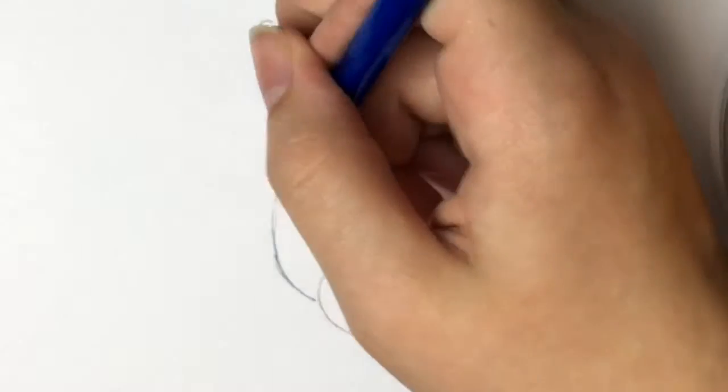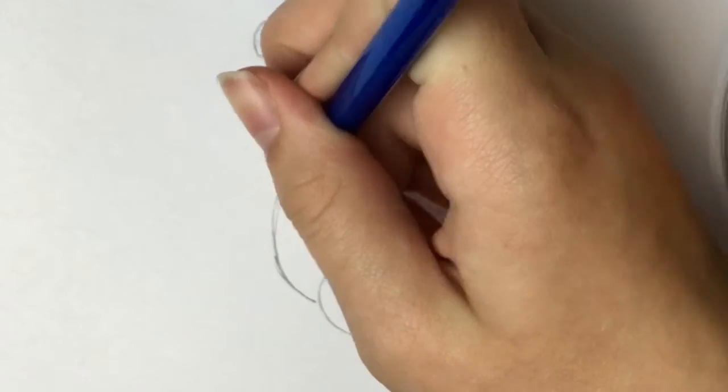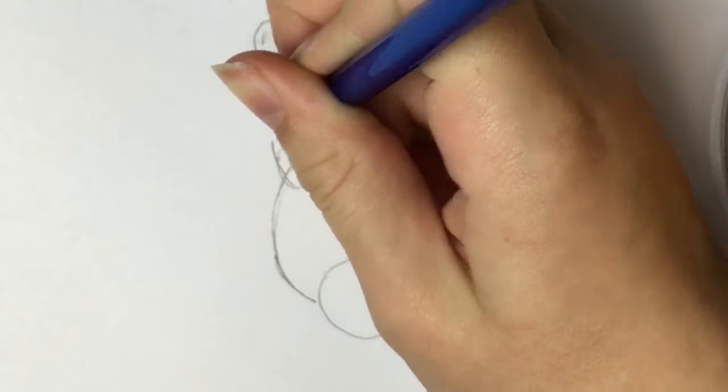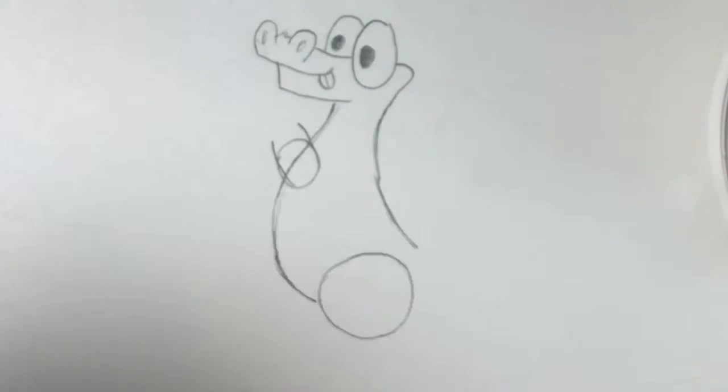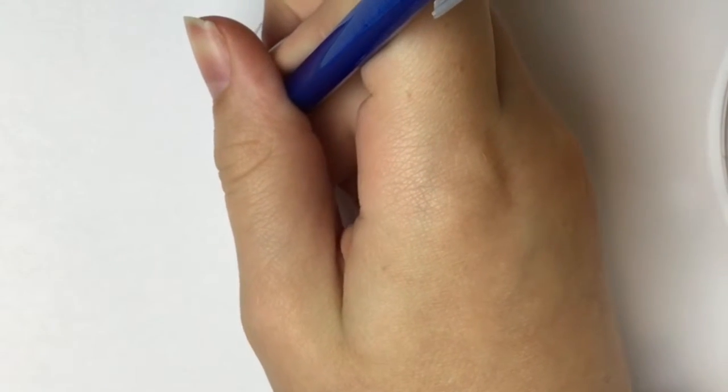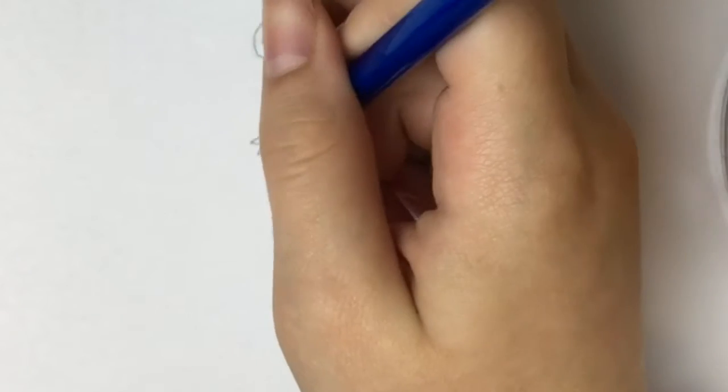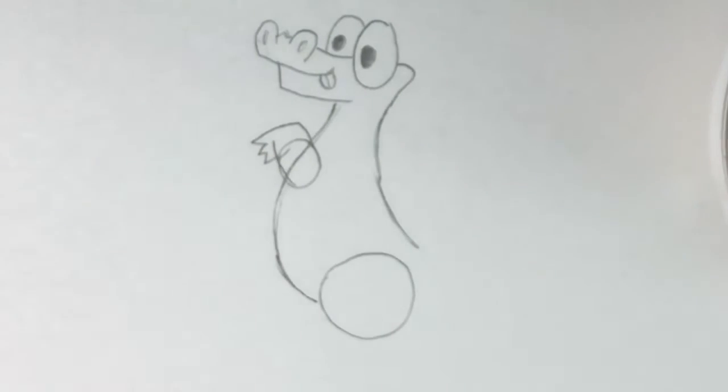Now draw two lines that extend along the surface of the small circle. Then draw two lines that move down until they are met and connect them with a zigzag line. Erase the guide lines.